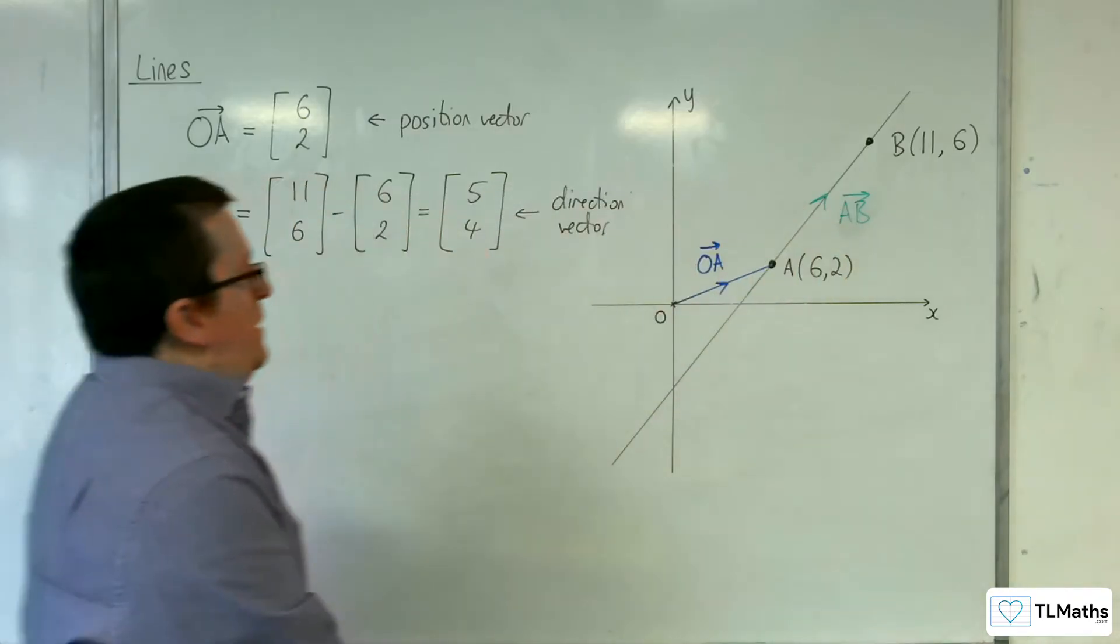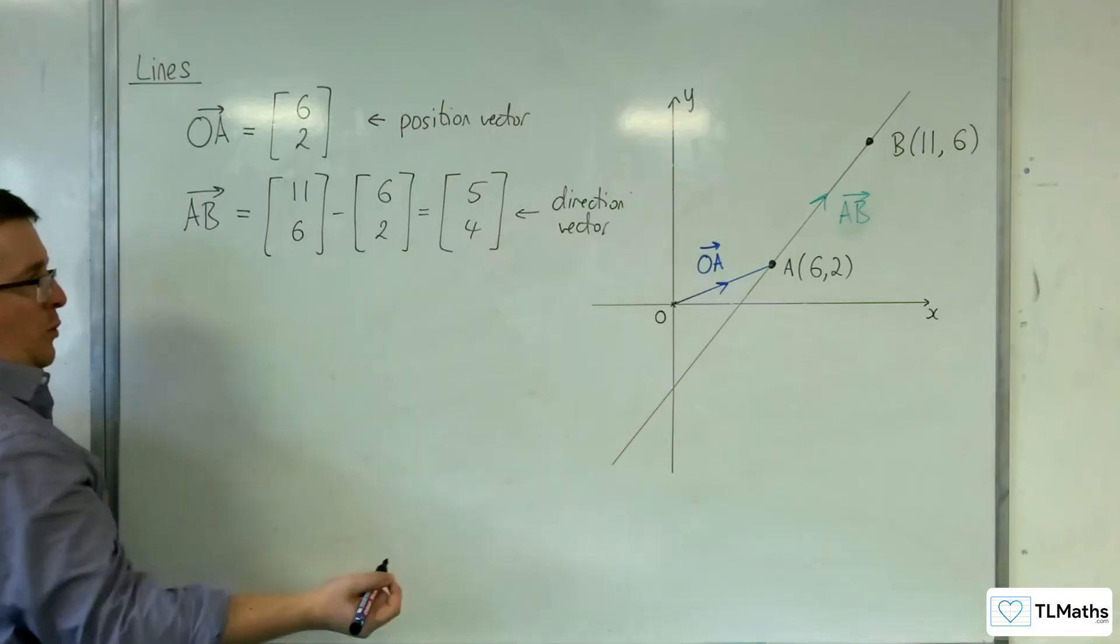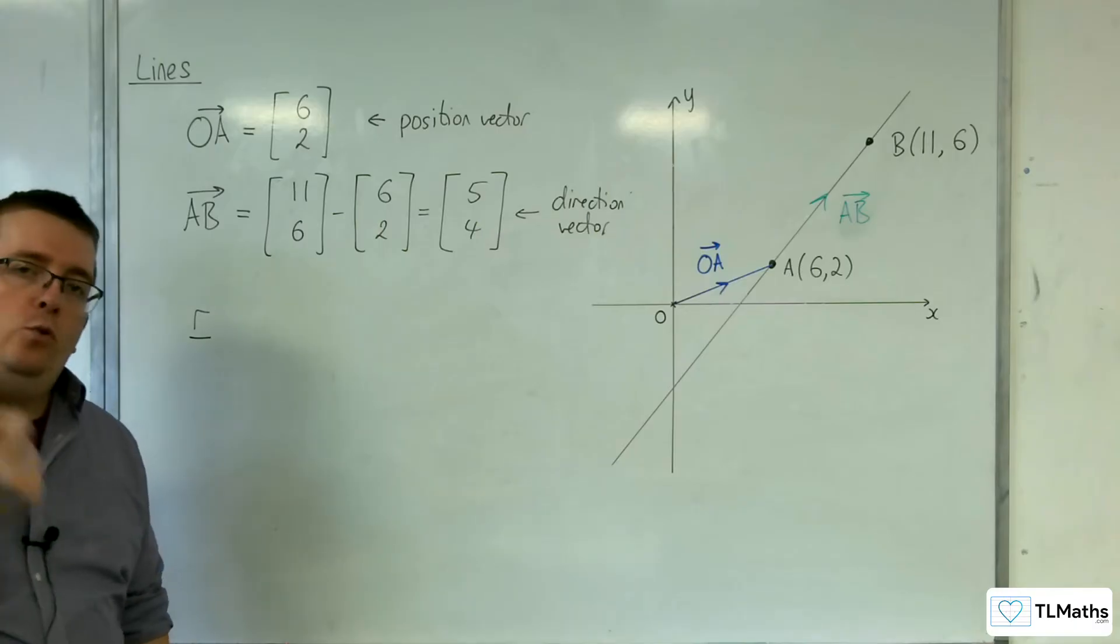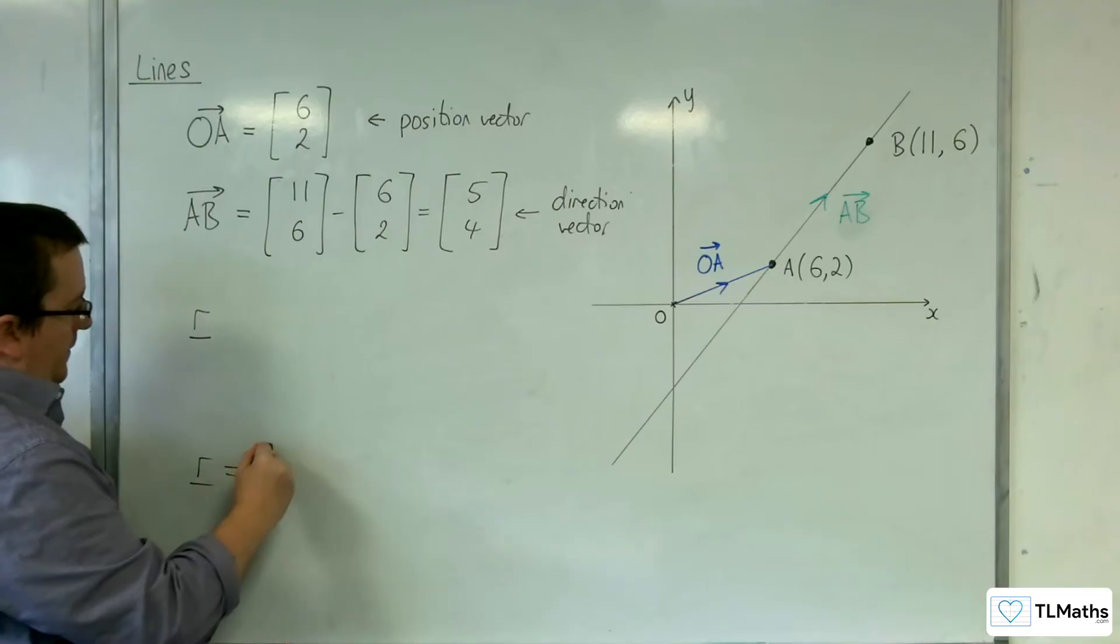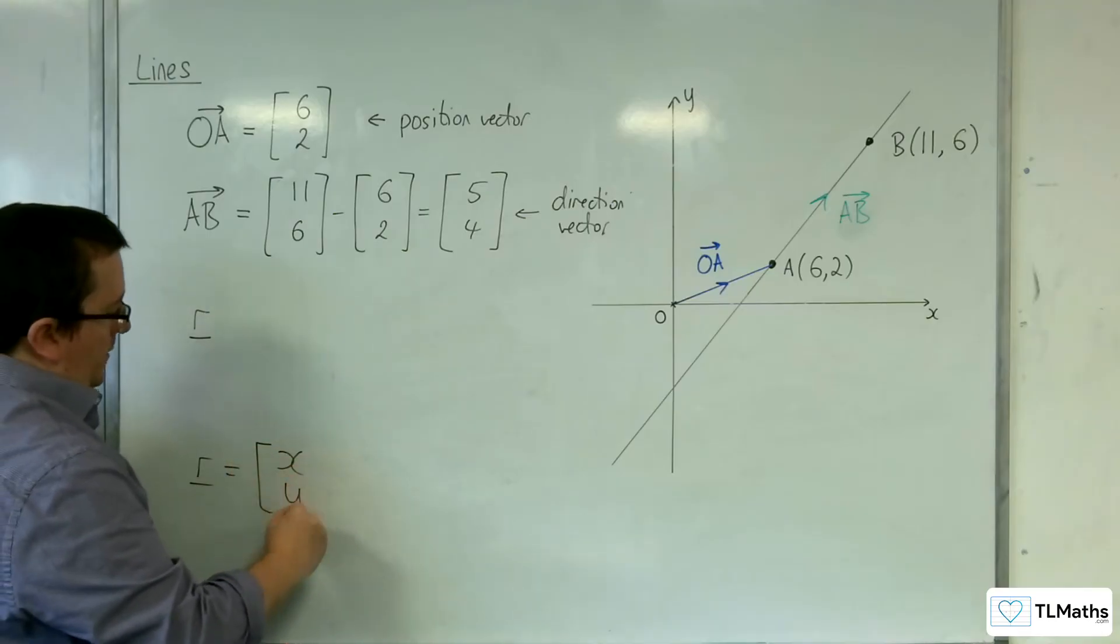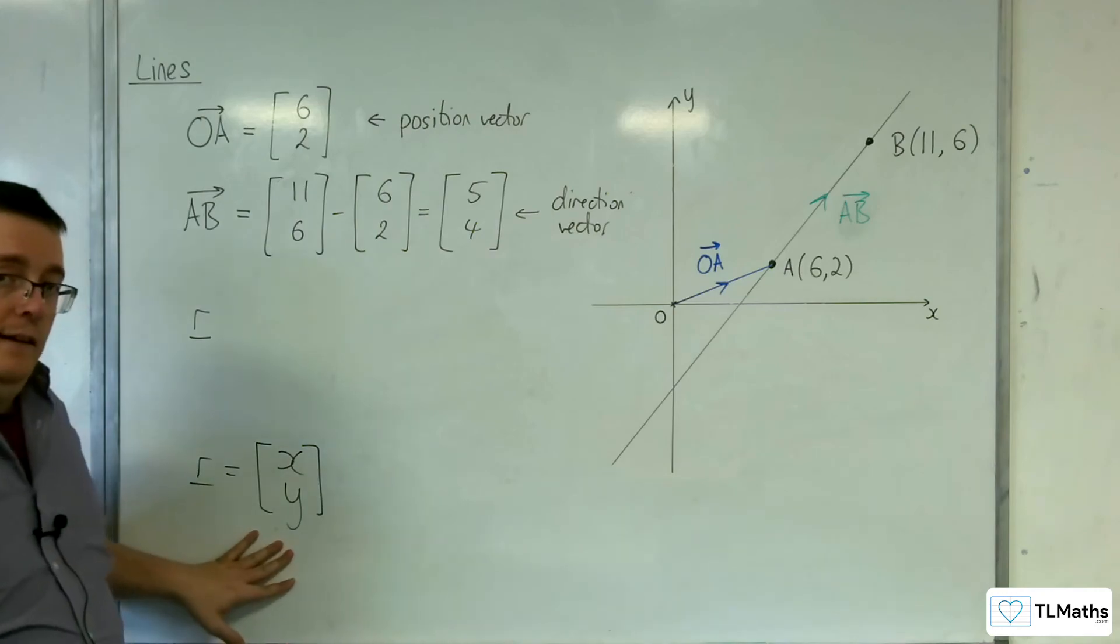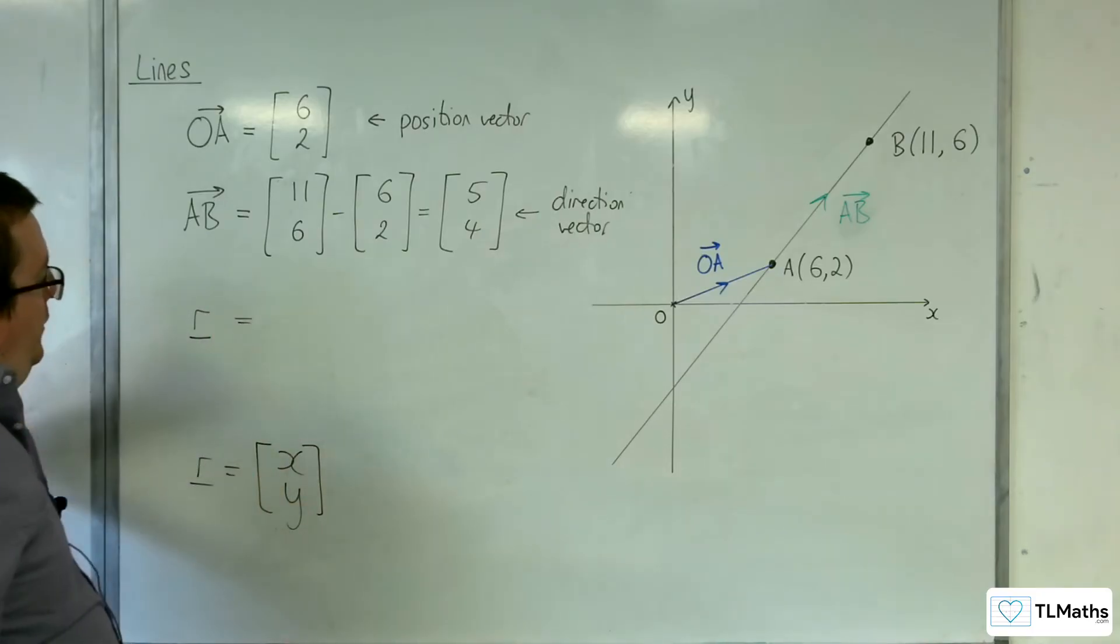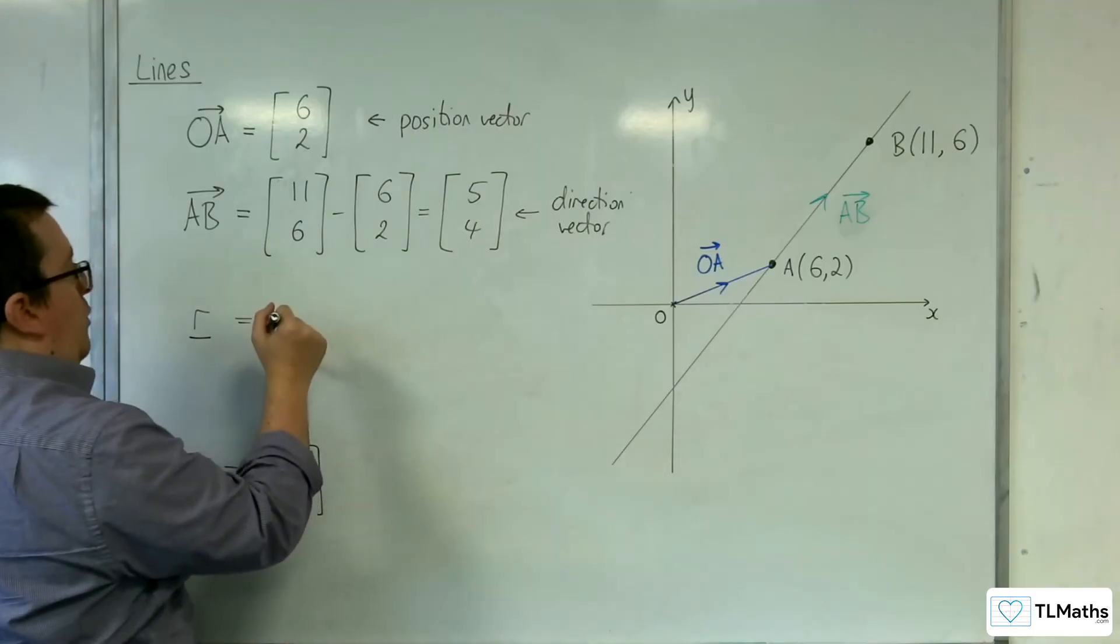So the idea is that if we had a general coordinate on the line, we're going to call that R. This effectively as a vector is (X, Y). So this is the position vector of any point that is on the line. What I do is first of all get onto the line using OA.